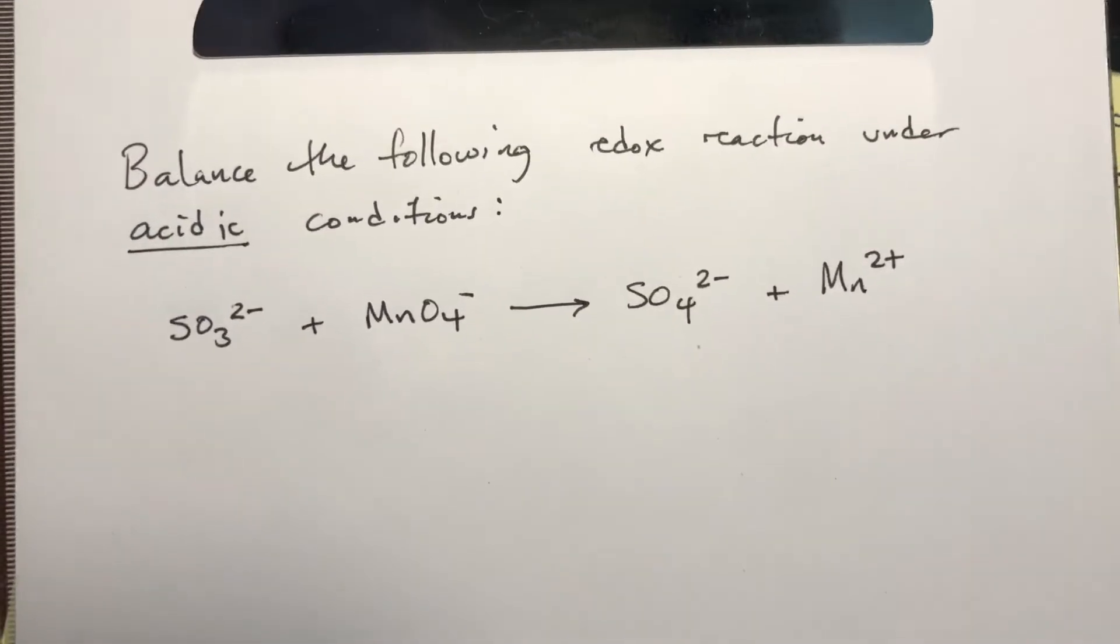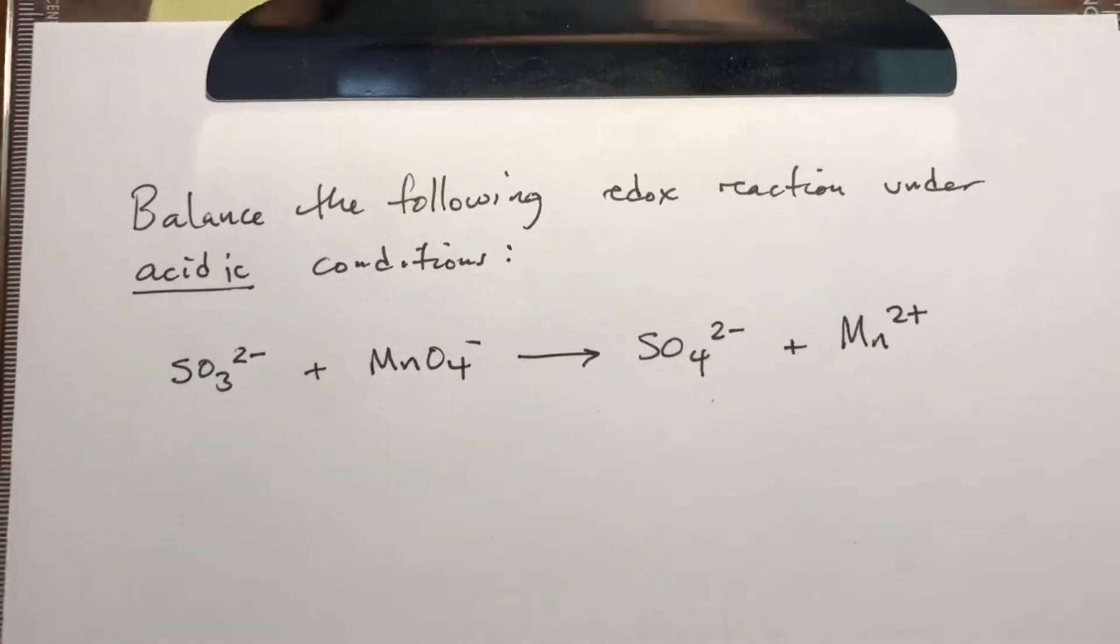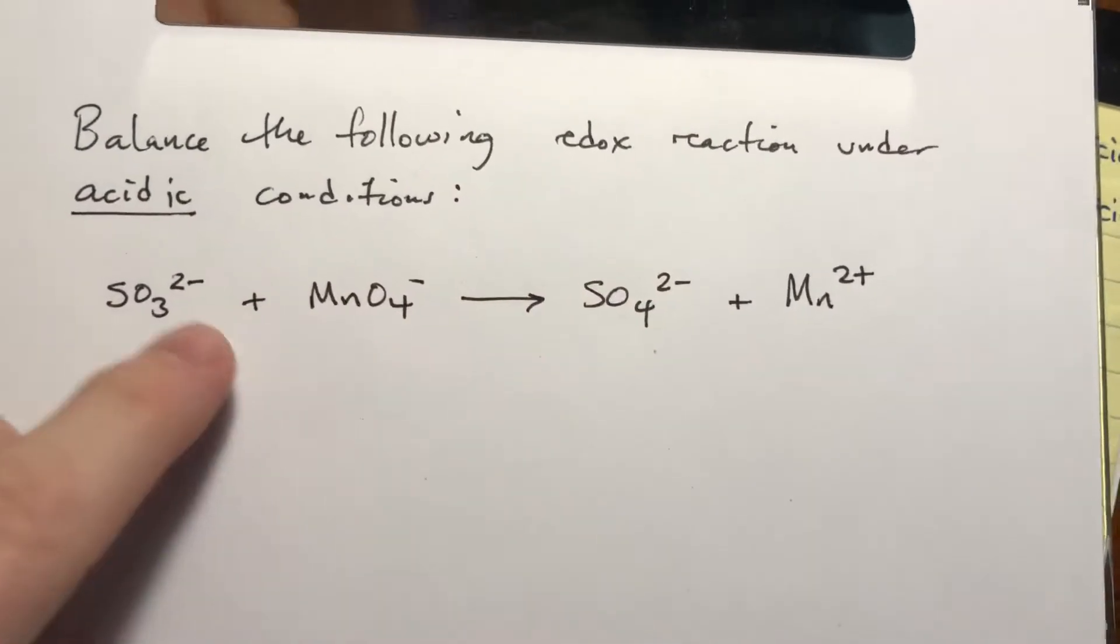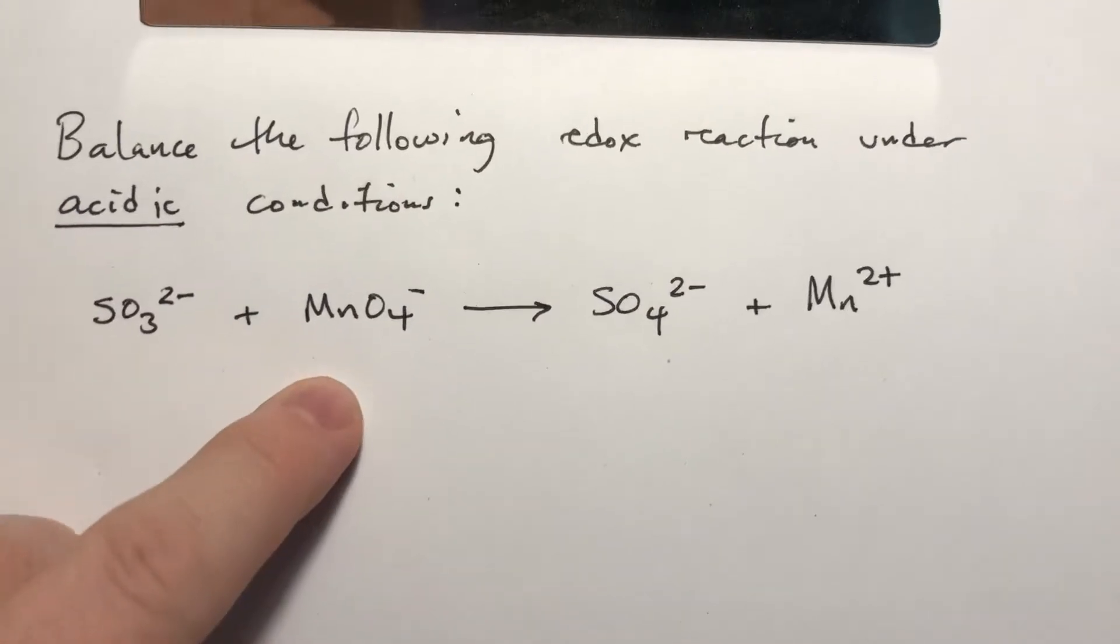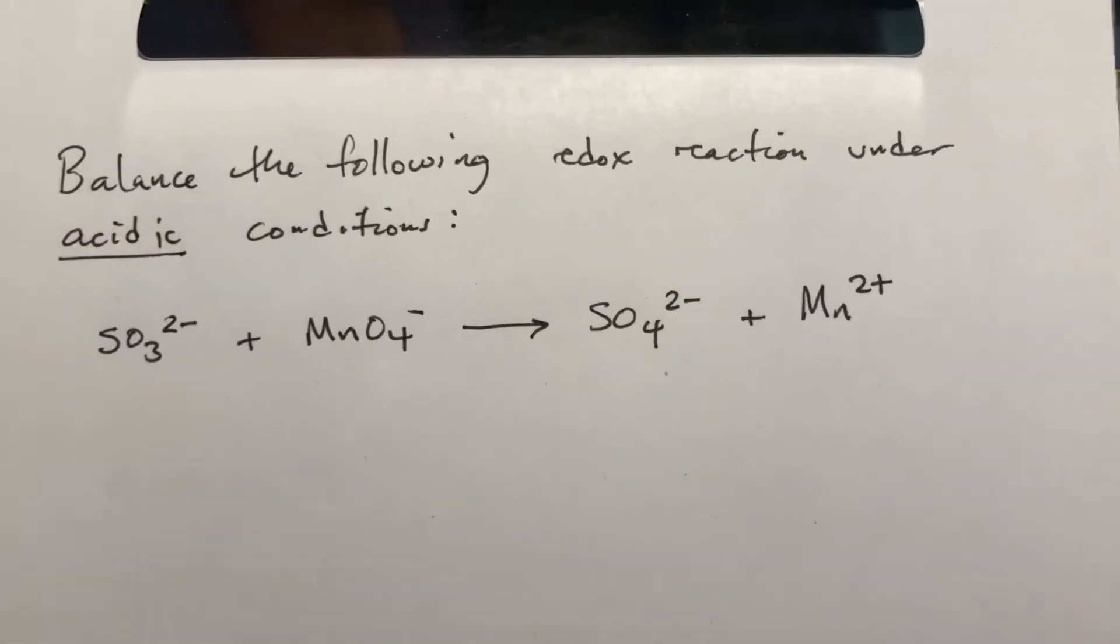Okay, we're gonna try an example of balancing redox reactions under acidic conditions. So this reaction, this is what you would be given: SO3 2- plus MnO4- forms SO4 2- and Mn2+.